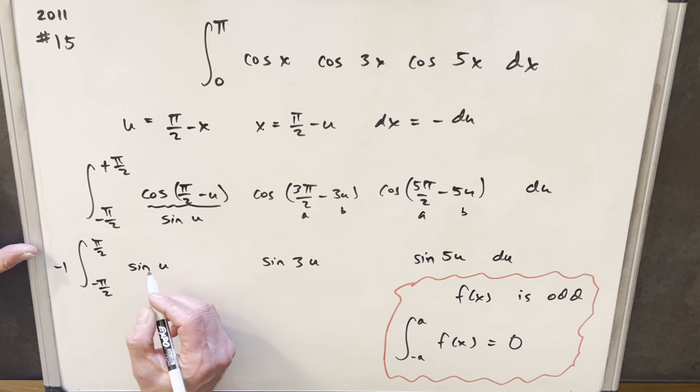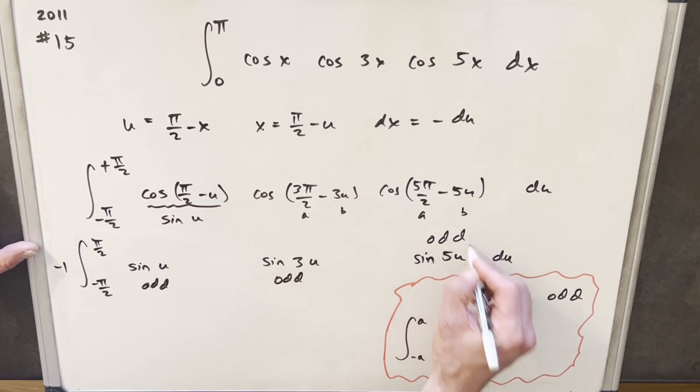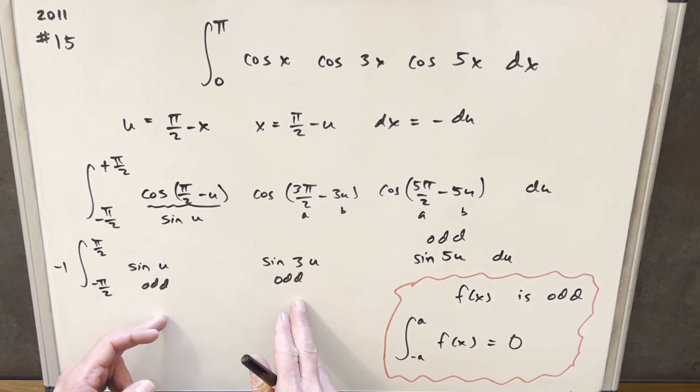Now we know that each of these, okay, we know a sine function, we know this is odd, and this is odd, and this is odd. The only thing we have to know is when we're multiplying odd functions. Now if we just had two functions, if you multiply an odd times an odd, it's even, but odd times odd times odd is odd.